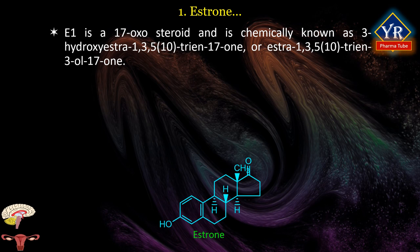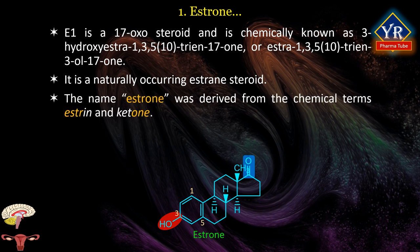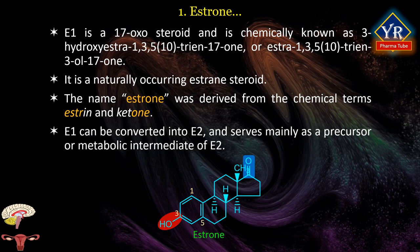Estrone is a 17-oxo steroid, chemically known as 3-hydroxy-estra-1,3,5(10)-triene-17-one. It is a naturally occurring estrogen steroid with double bonds at C1, C3, and C5 positions, a hydroxyl group at C3, and a ketonic group at C17. The name estrone was derived from the chemical terms estrogen and ketone. Its chemical formula is C18H22O2. Estrone can be converted into estradiol and serves mainly as a precursor or metabolic intermediate of estradiol.